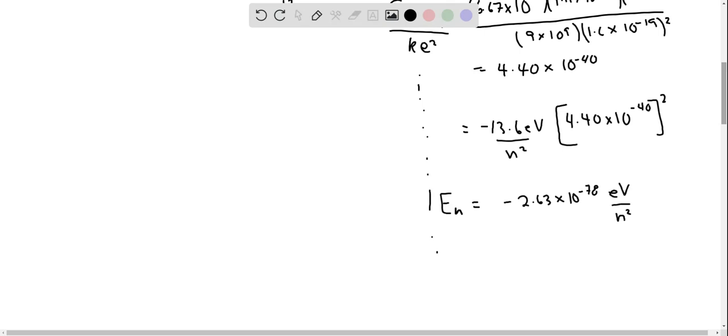And let me just check my numbers since this is very small numbers that can get goofed up in a calculator. Yeah, okay. And we could do something similar with the Bohr orbit radius.